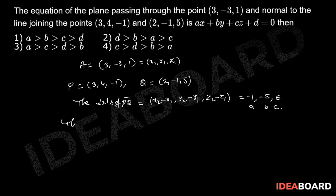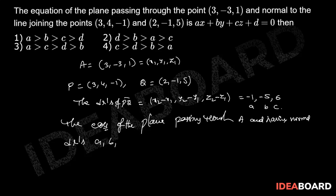Therefore, the equation of the plane passing through A and having normal DRs A, B, C is A(x - x₁) + B(y - y₁) + C(z - z₁) = 0